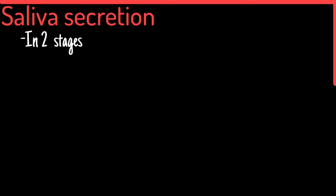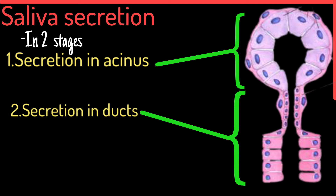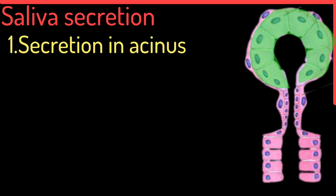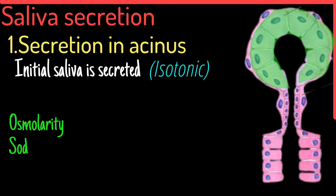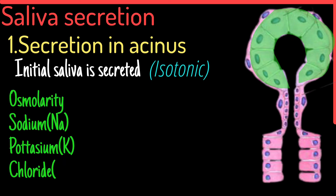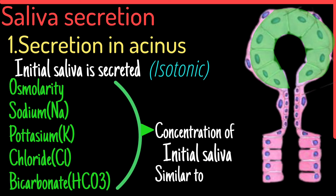Let's talk about saliva secretion. It occurs in two stages: the first being secretion in the acinus, and the second is secretion in the ducts. Secretory cells secrete initial saliva which is isotonic. The osmolarity, sodium, potassium, chloride, and bicarbonate concentration of the initial saliva are similar to those in plasma.